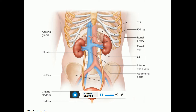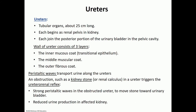The final portion discusses the elimination and storage of urine. We'll start off with the ureters, which are tubular organs about 25 centimeters long. They extend from the renal pelvis of the kidney all the way down to the urinary bladder, opening up into the posterior surface of the urinary bladder.